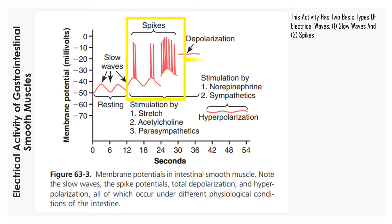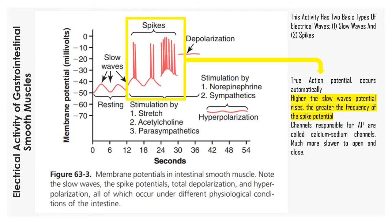Next is spikes. Spikes are true action potentials and occur automatically. The higher the slow wave potential rises, the greater the frequency of the spike potentials will be, usually ranging between 1 and 10 spikes per second. The spike potential lasts 10 to 40 times as long in the GI tract as the action potential in large nerve fibers. The channels responsible allow a large number of calcium ions to enter along with a small number of sodium ions, and therefore they are known as calcium-sodium potentials.